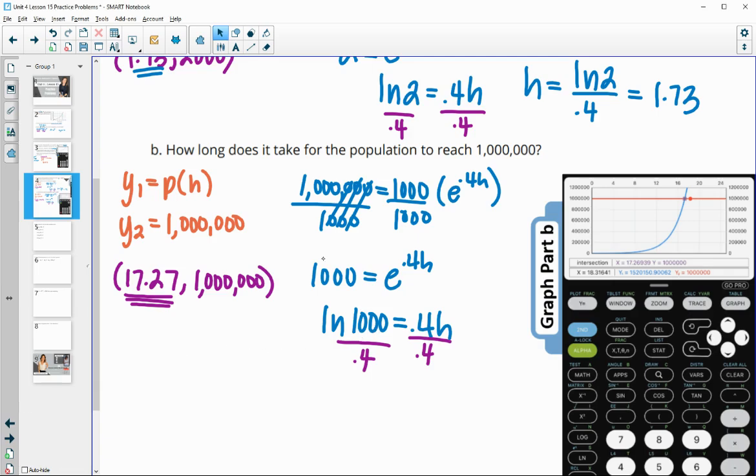And you'll get that, approximately 17.27, again, for the hours to get you to a million. So either graphing the output that you need with the function and finding where they intersect or solving backwards using logarithms.